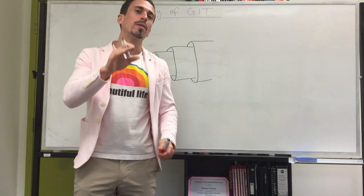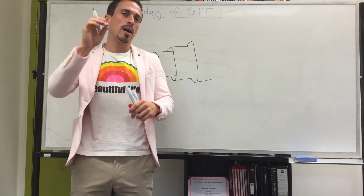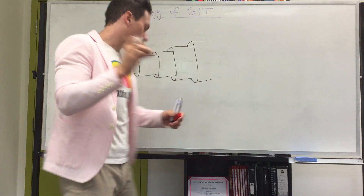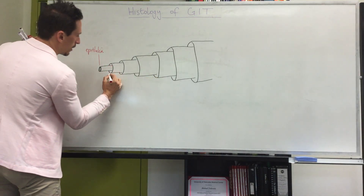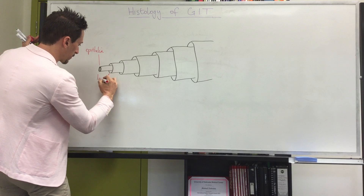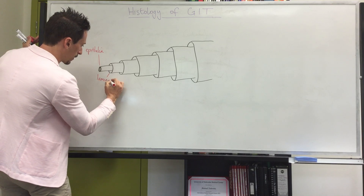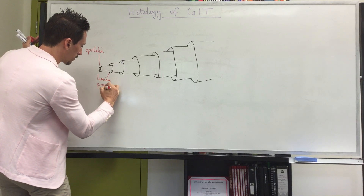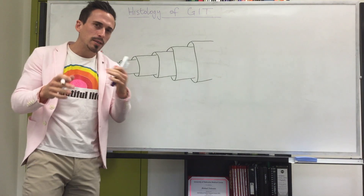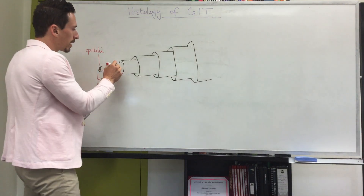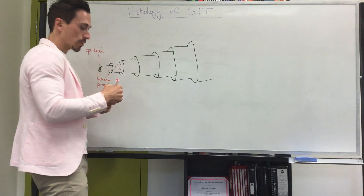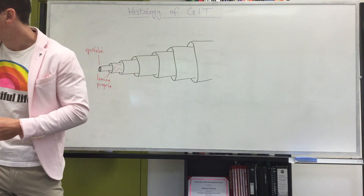The next tissue layer — all epithelial tissue will sit on a very thin layer of connective tissue which we call the lamina propria. The lamina propria is a bit of connective tissue and there are going to be some blood vessels associated in this area to help feed the underlying tissue.